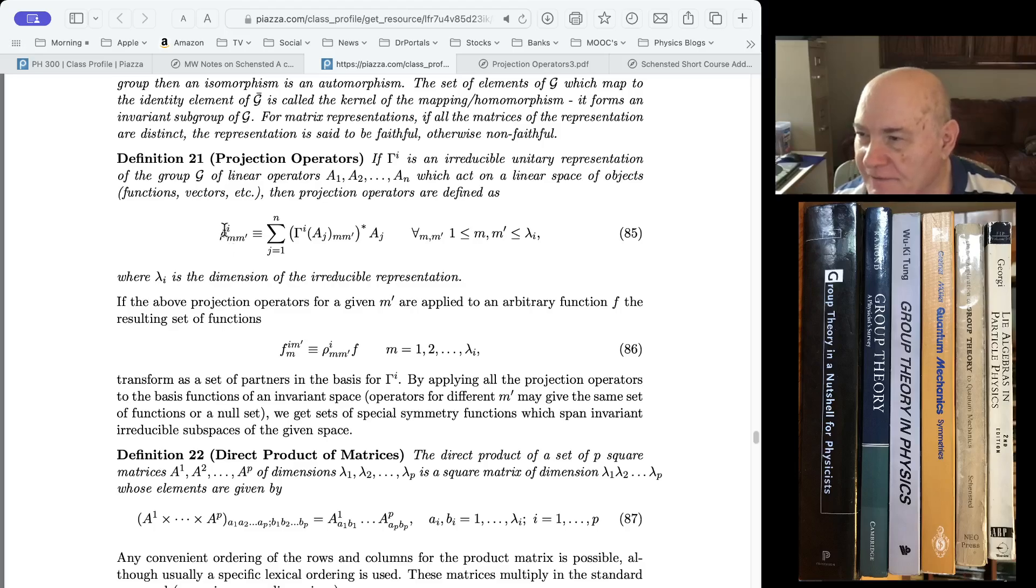The superscript I refers to which irreducible representation we're taking the projection operator. And M and M prime are the matrix indices, assuming we have a matrix. If we have a one-dimensional matrix, these two indices are trivial and don't matter.